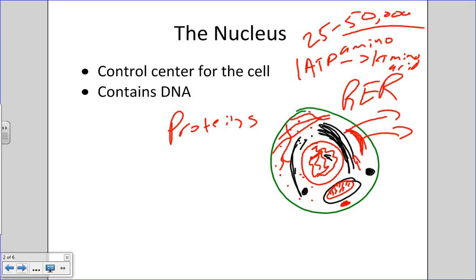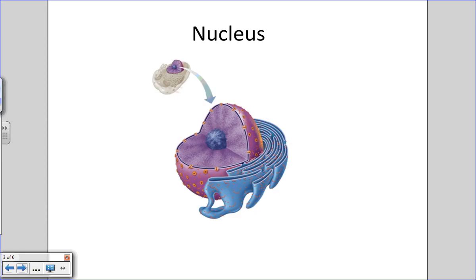That's why we say the nucleus is the control center — it can drive the synthesis of many different proteins. Looking at the general representation of the nucleus from the textbook, we get a general idea of what the nucleus looks like. Notice the nucleus is not directly in the center of the cell, which is accurate because cells are very dynamic structures.